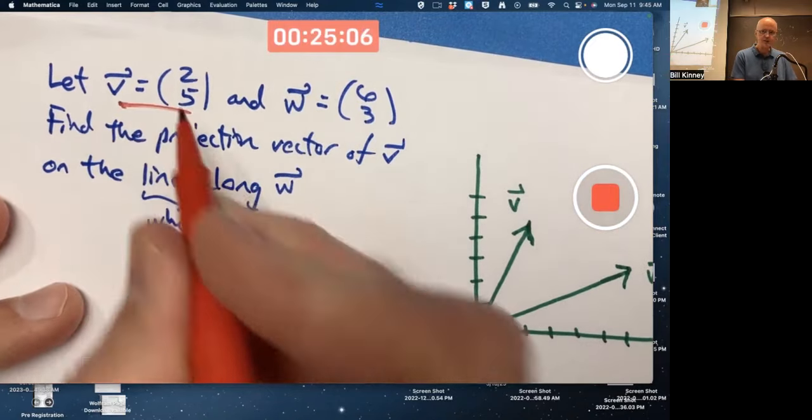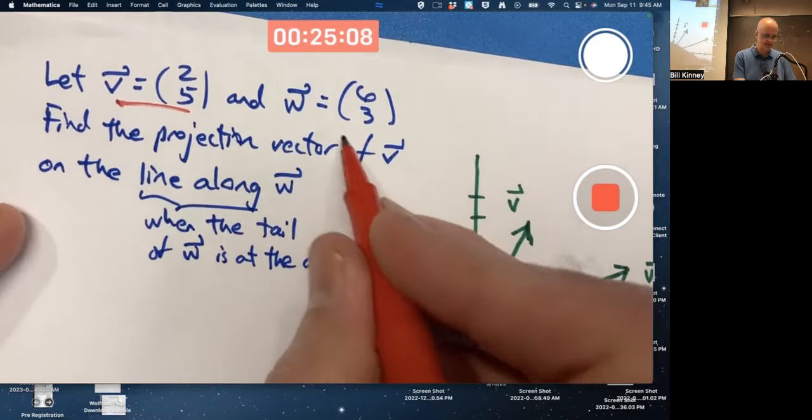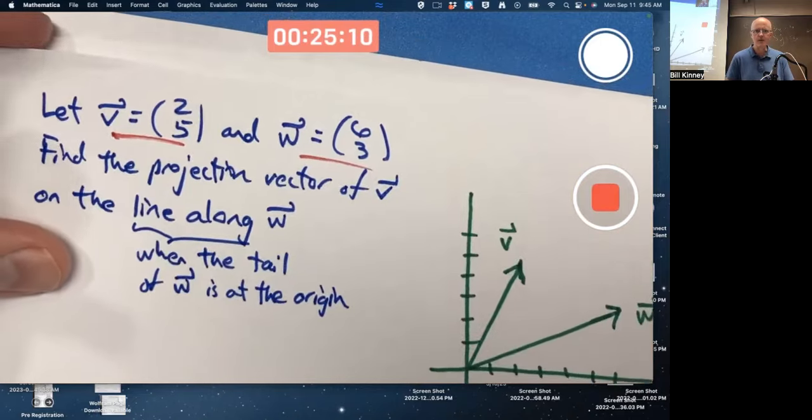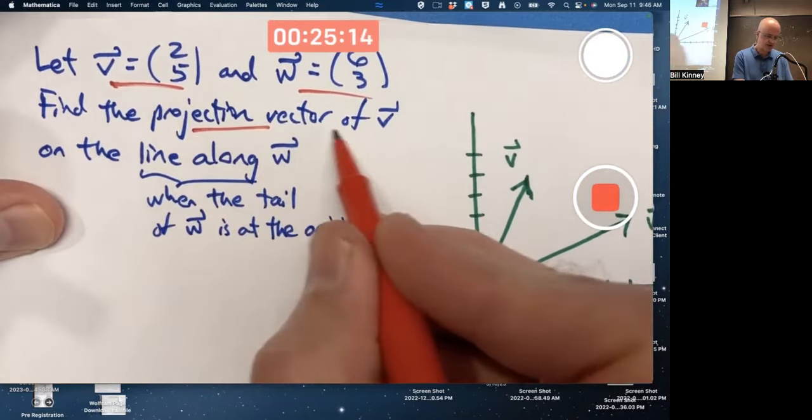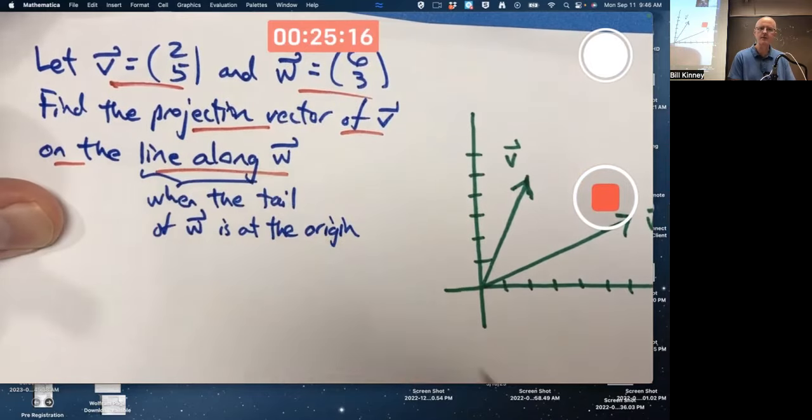We've got two vectors, V is 2, 5, and W is 6, 3. We're trying to find the projection vector of V on the line along W.